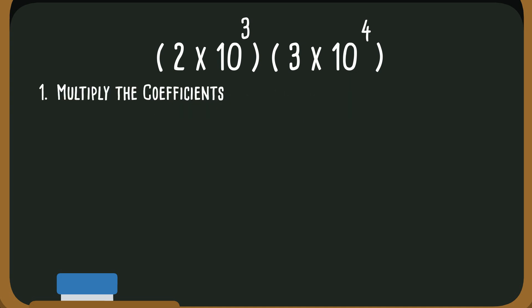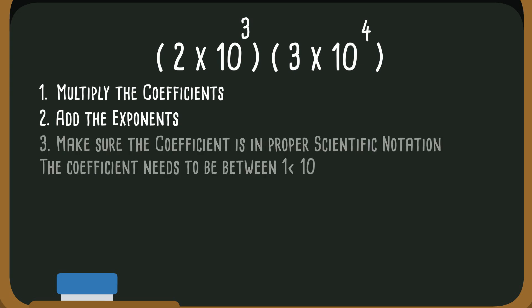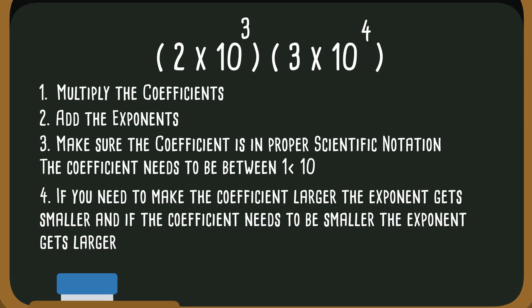First, you're going to multiply the coefficients. Then, you're going to add the exponents. And then, after you multiply the coefficients, it needs to be in proper scientific notation, which means the coefficient needs to be between 1 and less than 10. If you need to make the coefficient larger, the exponent gets smaller. And if the coefficient needs to be smaller, the exponent gets larger.